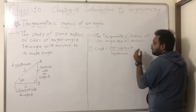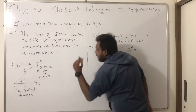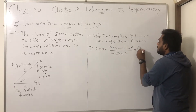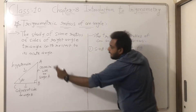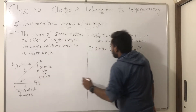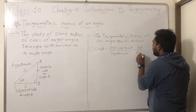The first ratio is sin A. Sin A equals opposite side to angle A divided by hypotenuse. So the opposite side of angle A is AB, and the hypotenuse side is AC. So sin A equals AB by AC.